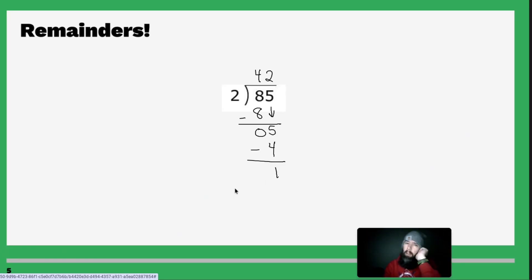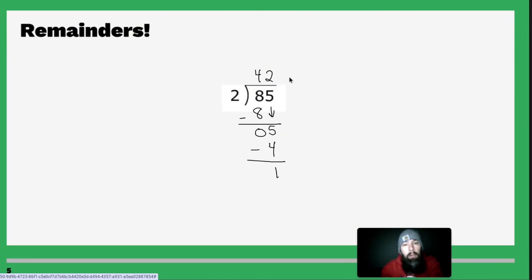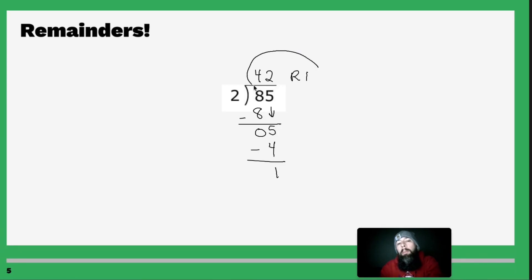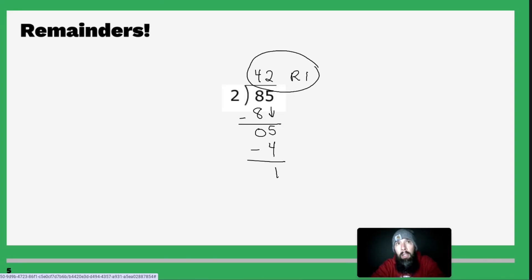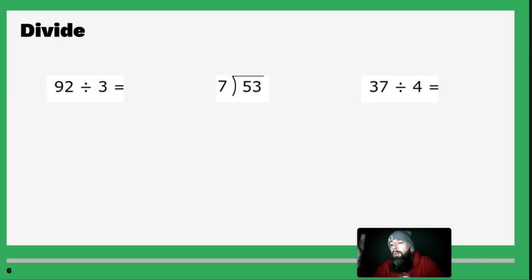Subtract 4 — that gets you 1. Uh-oh, we're out of numbers! In the last five problems that number was 0, but now it's not 0 — there's a leftover number. That number is your remainder. So we write 42 remainder 1, or R1. If I turn this into a word problem: I have 85 cookies and I'm dividing them amongst two friends — everybody gets 42 cookies but there's one left over. That one remainder cookie belongs to me, because I deserve it — I'm teaching in the dark!